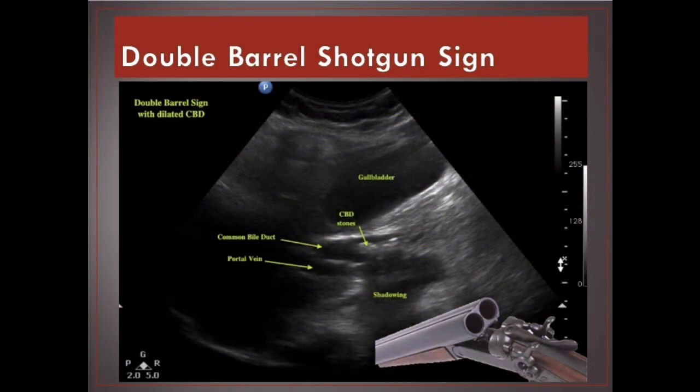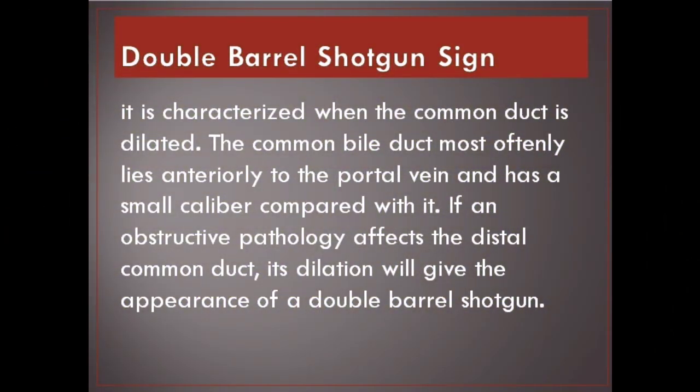Double barrel shotgun sign. It is characterized when the common duct is dilated. The common bile duct most often lies anteriorly to the portal vein and has a small caliber compared with it. If an obstructive pathology affects the distal common duct, its dilation will give the appearance of a double-barrel shotgun.